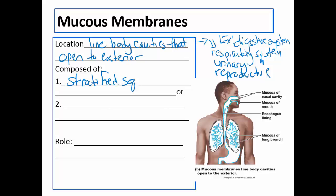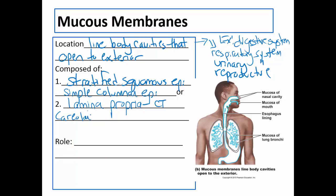Mucous membranes are composed of stratified squamous epithelium or simple columnar epithelium. Stratified squamous epithelium consists of many layers of flat cells, flat at the free edge. Simple columnar is one layer of tall and thin cells. These sit on a type of connective tissue called lamina propria, which is actually areolar connective tissue but with a lot more cells in it.